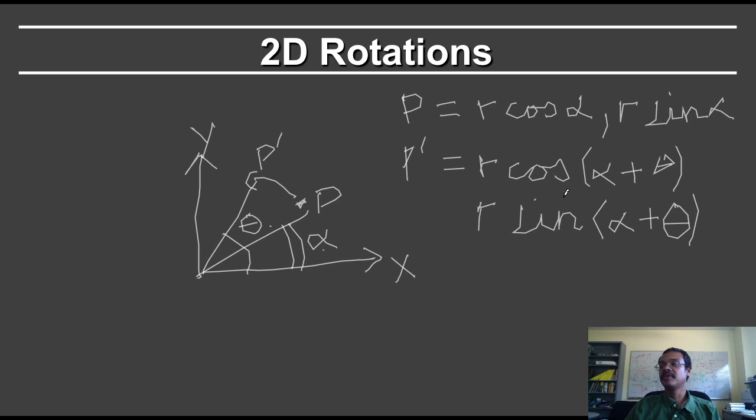So cos of alpha plus theta is cos alpha cos theta minus sine alpha sine theta. And sine alpha plus theta is sine alpha cos theta plus cos alpha sine theta.